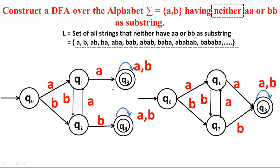This minimal DFA has four states. However, this is not the solution to our question. In our question, we must not have 'aa' or 'bb' as substrings. So I have to make a machine which accepts only strings with neither 'aa' nor 'bb'.